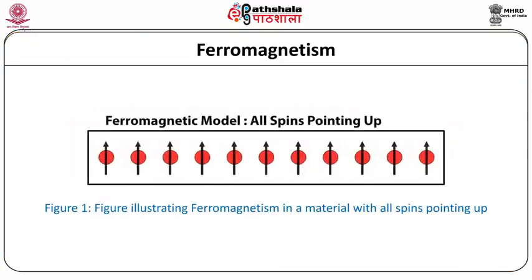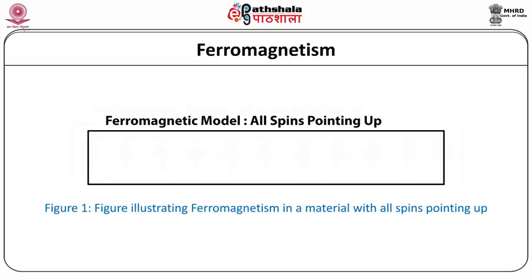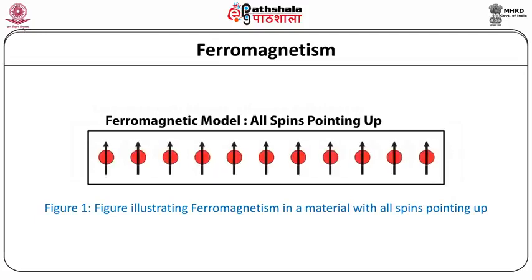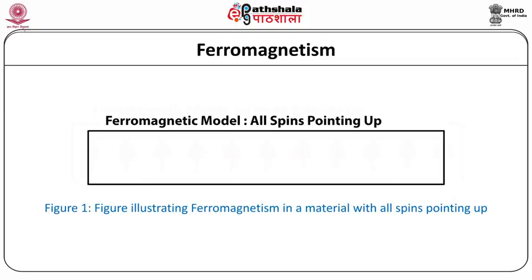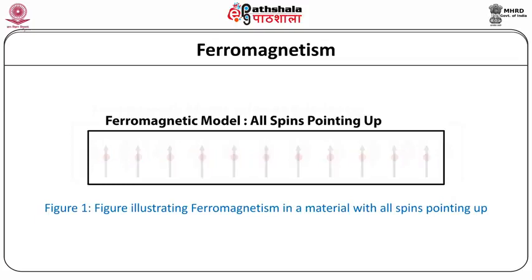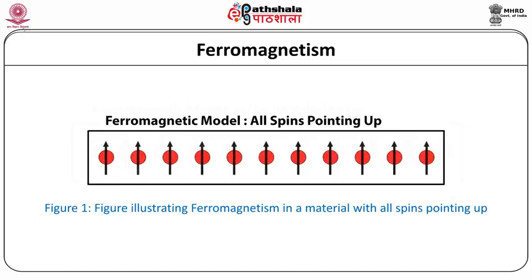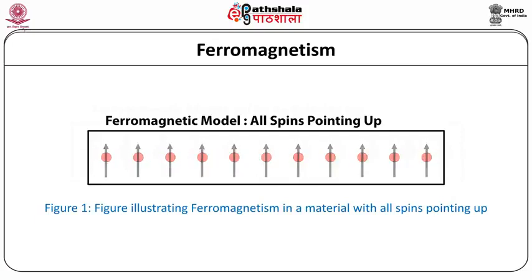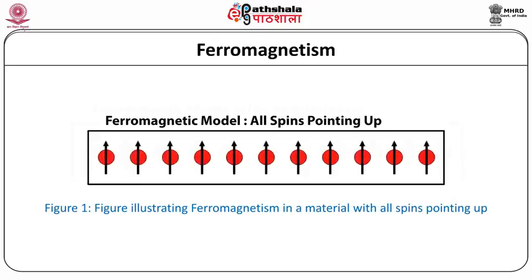What is ferromagnetism? This figure nicely illustrates the ferromagnetic model. In a ferromagnetic material, all the spins are pointing in the same direction — in this case they are all pointing up. So in a ferromagnetic model, all spins point up. That is the basic idea about ferromagnetism.